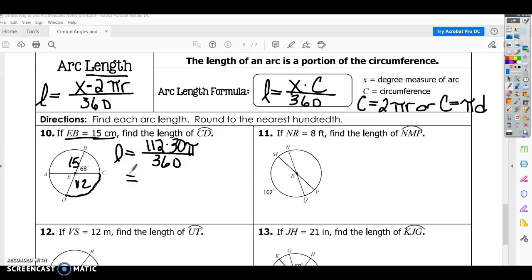So if we do 112 times 30, that's going to give us 3,360 pi over 360. So we're just simplifying at this point.